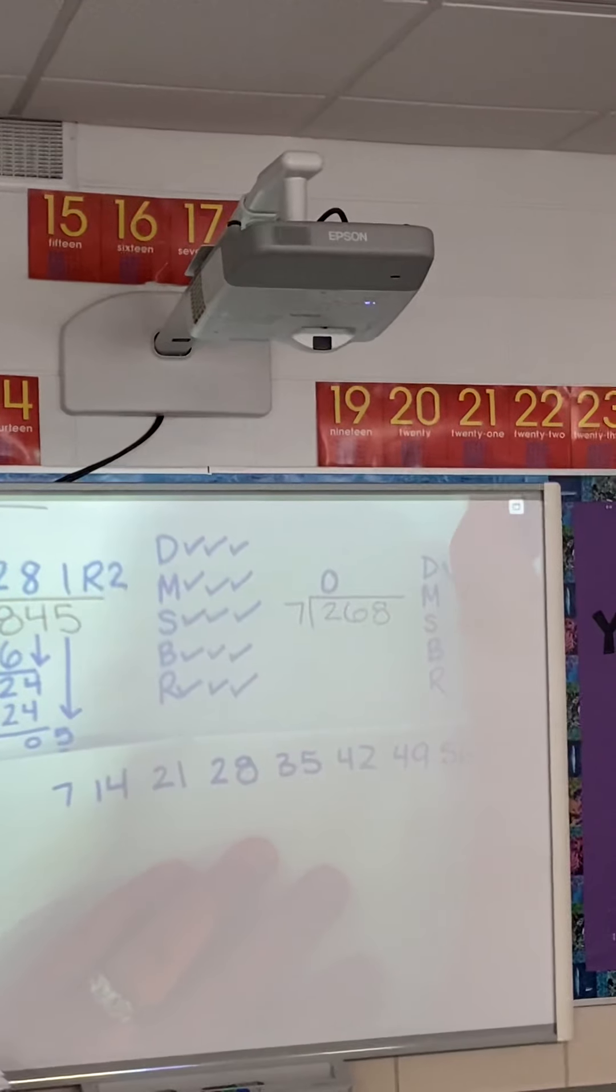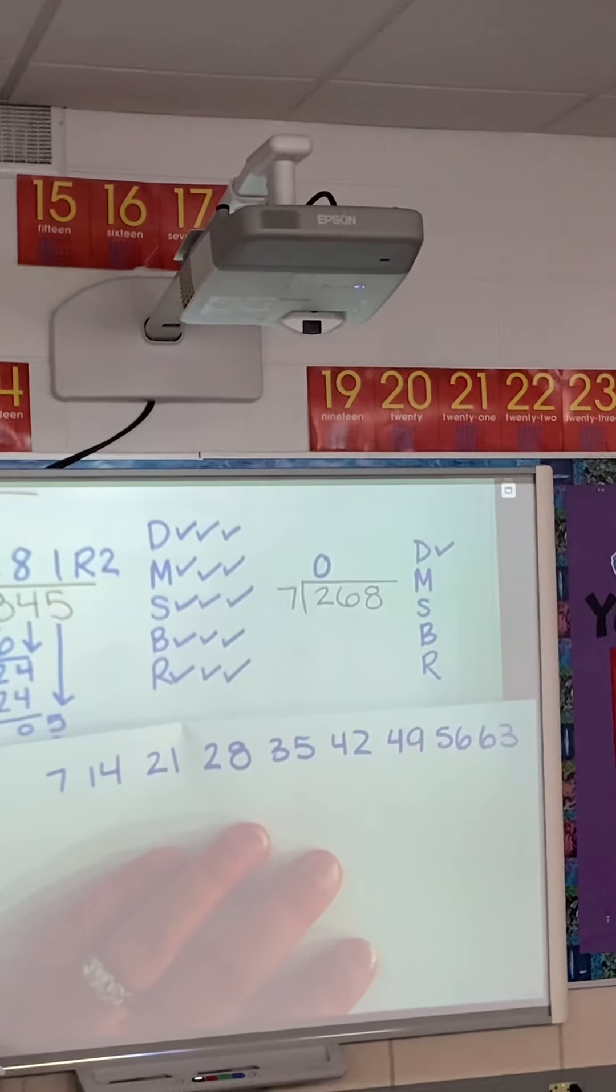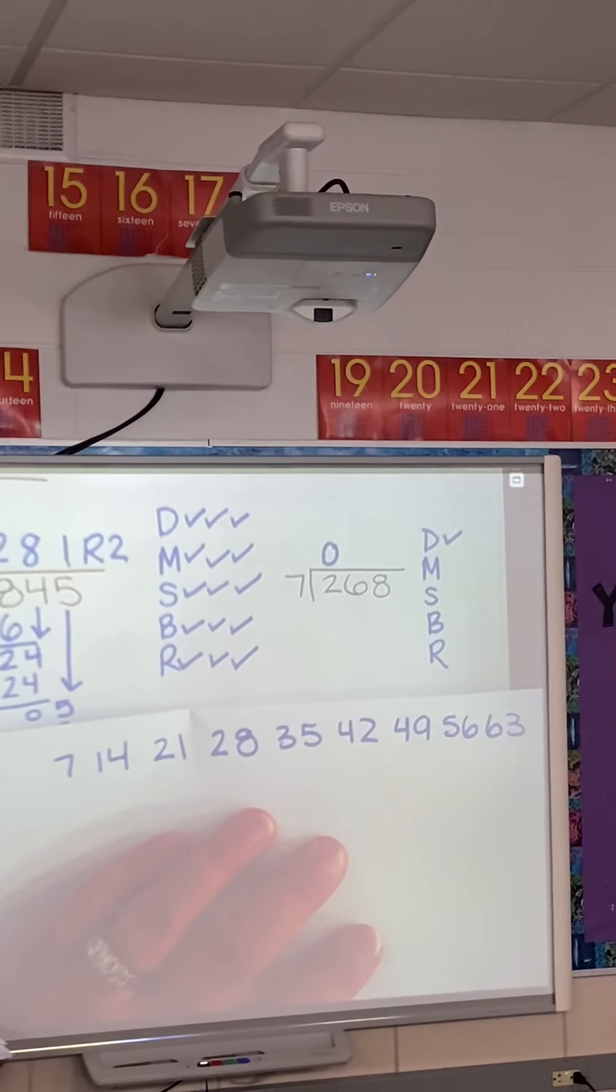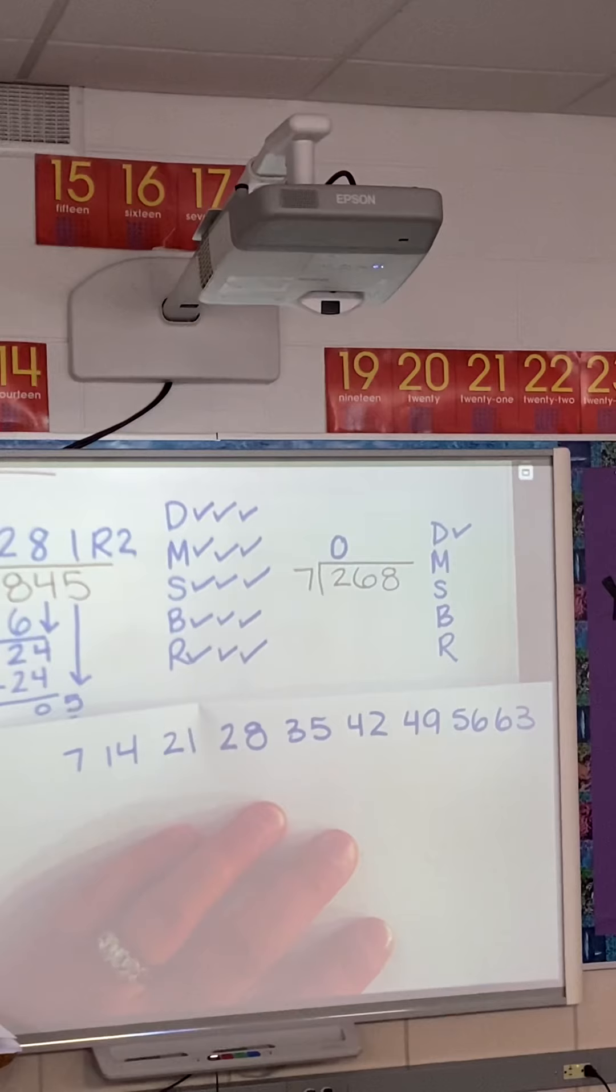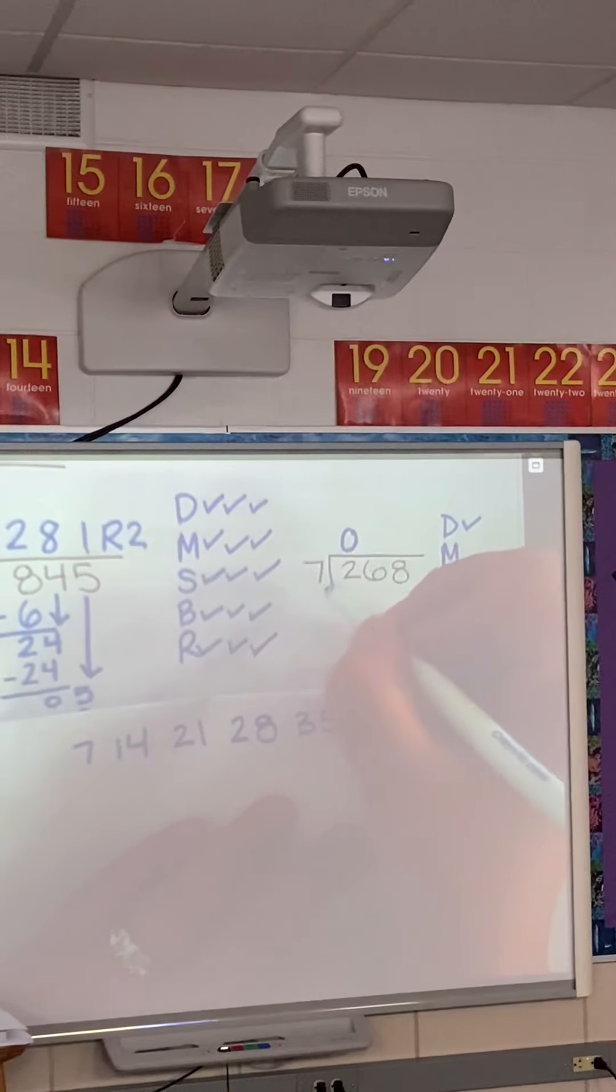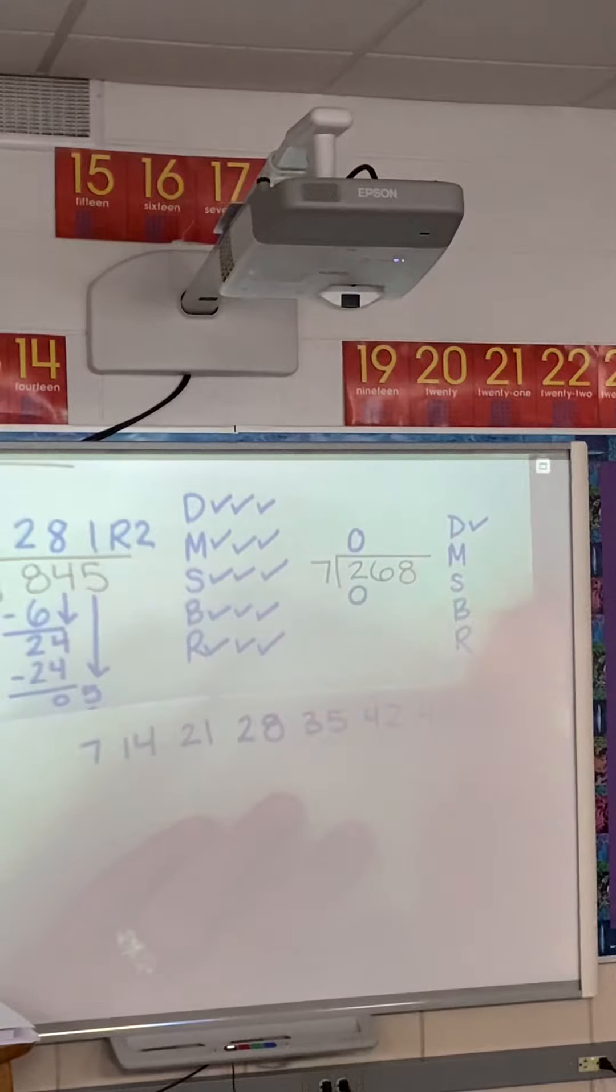Check off dad. What is mom multiplying next? Chance, what's mom multiplying? Seven times zero. Exactly. What is that? Zero times seven is zero. Checking off mom.